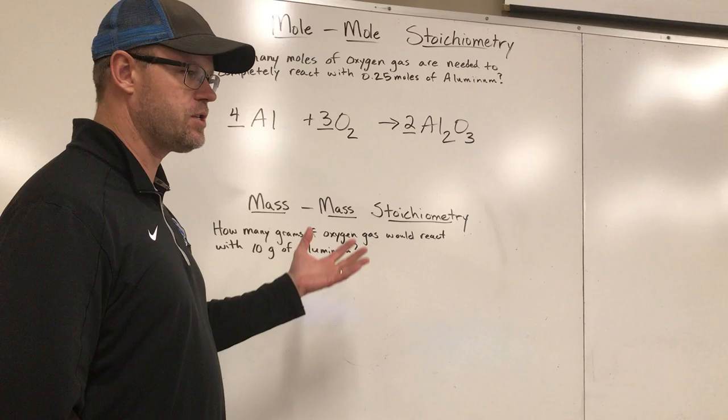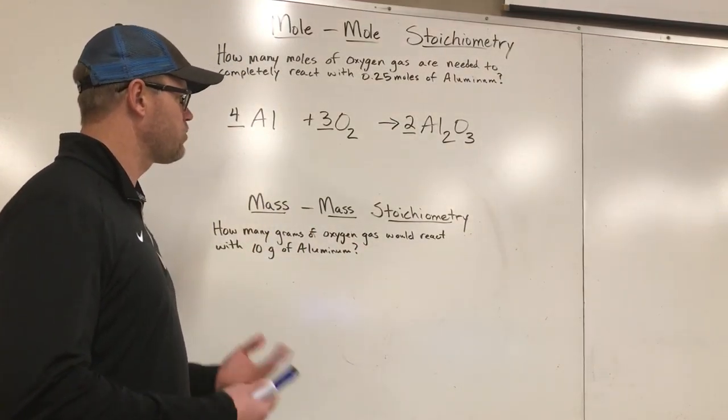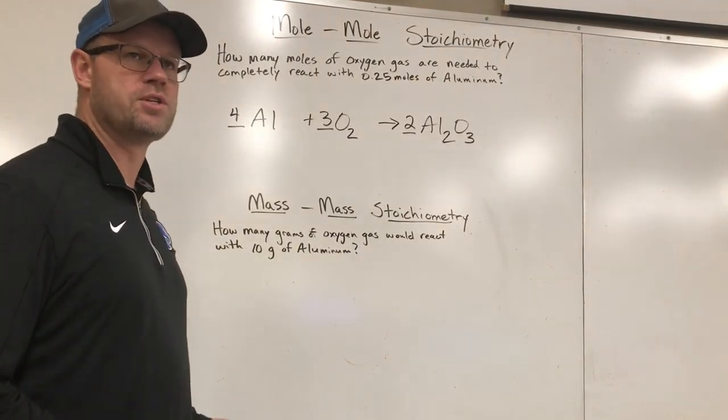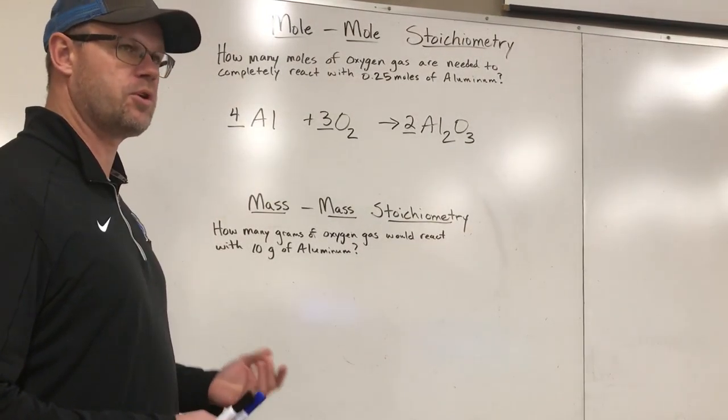For example, how much of this will react with something else, or how much of something else will be produced. So it's a way of tracking these, and there's several approaches to this, but I want to just try to make sure you understand where the numbers are coming from and what they actually represent.